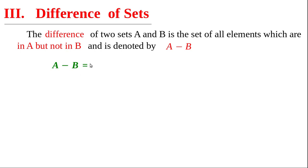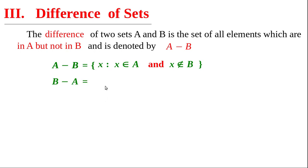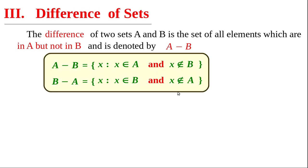A minus B equals the set of all x such that x belongs to A and x does not belong to B. Then what is B minus A? B minus A is again the set of all x such that x belongs to B and x does not belong to A. Write this in a box — it is very important.